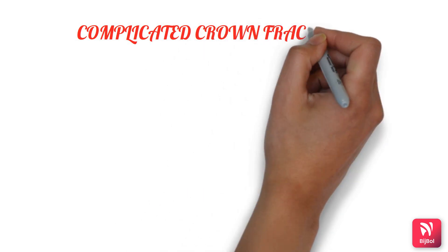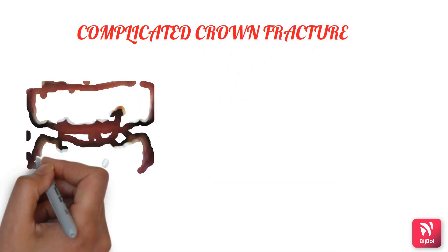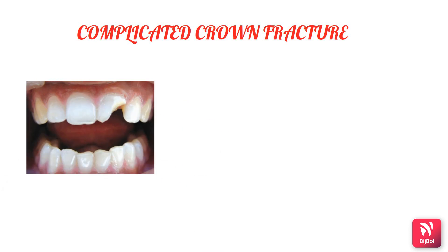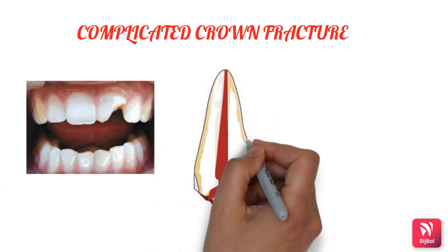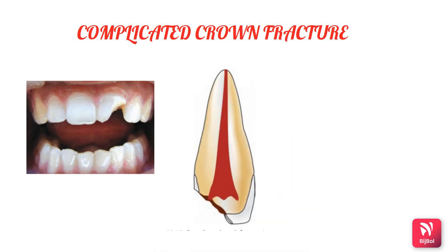In complicated crown fracture, the crown fracture involves the enamel, dentin, and the pulp — hence the name 'complicated' crown fracture.